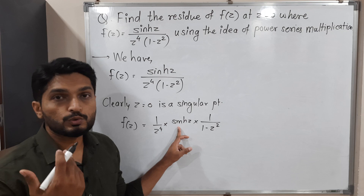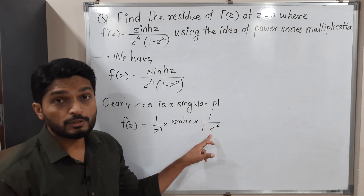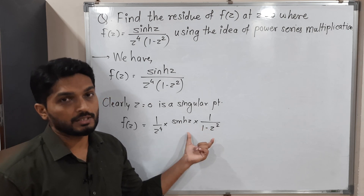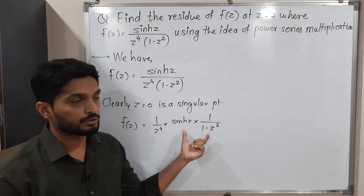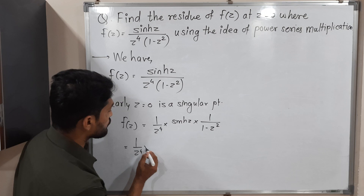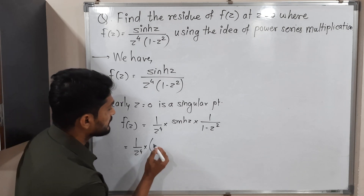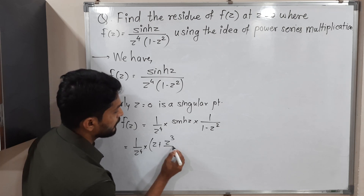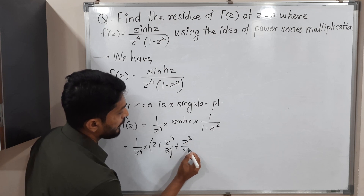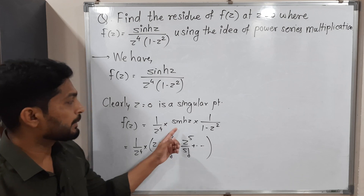We will find each series and then take the product of these two series to get the required Laurent series expansion. This equals 1 over z⁴. Do you know the series of hyperbolic sine z? It is z plus z³ over 3 factorial plus z⁵ over 5 factorial. This is the standard series for hyperbolic sine z.